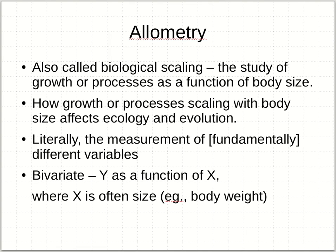It's also called biological scaling, where we're trying to find a scaling function — a model regression slope that will help explain patterns. It is literally the measurement of fundamentally different variables where the bivariate relationship — and this is an important detail — we're only talking about bivariate relationships. Other regressions using ordinary least squares allow us to use multiple x's. In this case, SMA regression only allows us to work with one x. So you have y as a function of x, and x is often size in allometry.